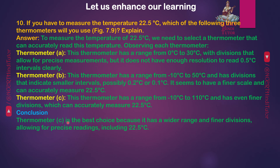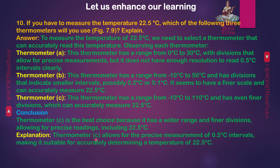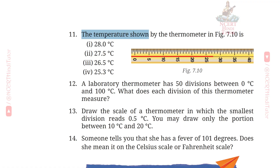Conclusion: Thermometer C is the best choice because it has a wider range and finer divisions allowing for precise readings including 22.5 degrees Celsius. Thermometer C allows for precise measurement of 0.5 degree Celsius intervals, making it suitable for accurately determining a temperature of 22.5 degrees Celsius.